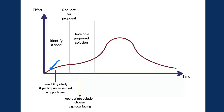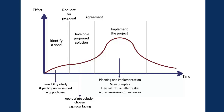One solution would be chosen at the end of this stage. For our potholes example, there are a variety of ways we could solve the problem, but probably the best way is to resurface the road. If everyone is in agreement, we can move on to the third stage: the implementation of the project. This is the actualization of the plan and putting everything into practice. As we enter this stage the project becomes more complex and is divided into smaller tasks — for example, making sure the team has enough resources and a plan to follow.